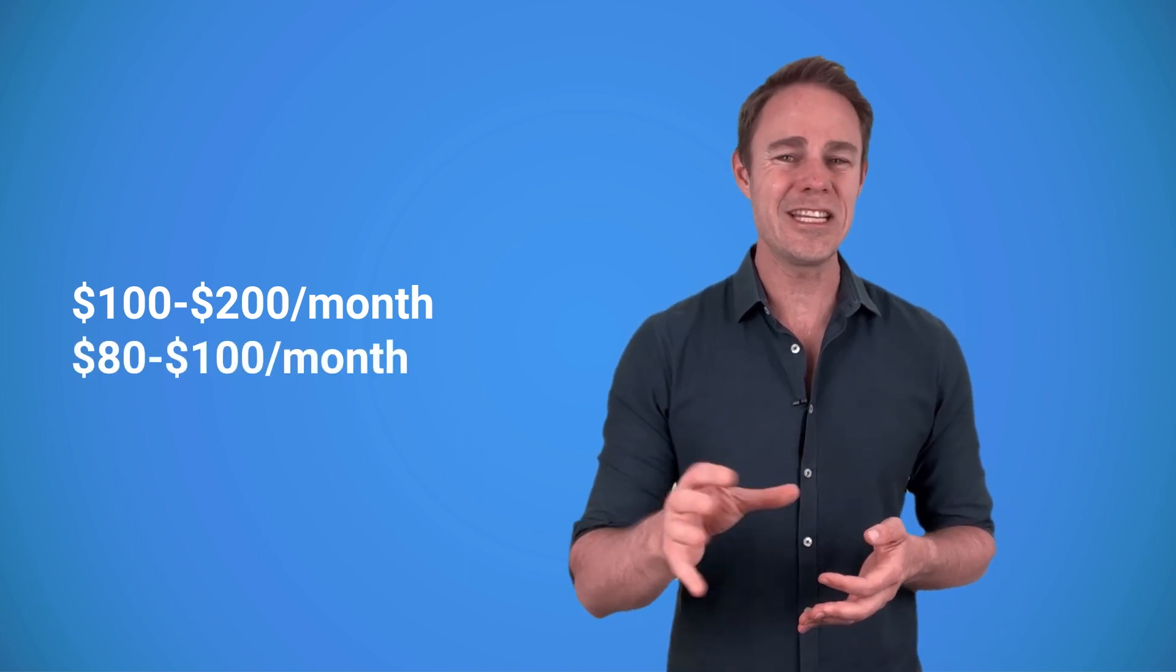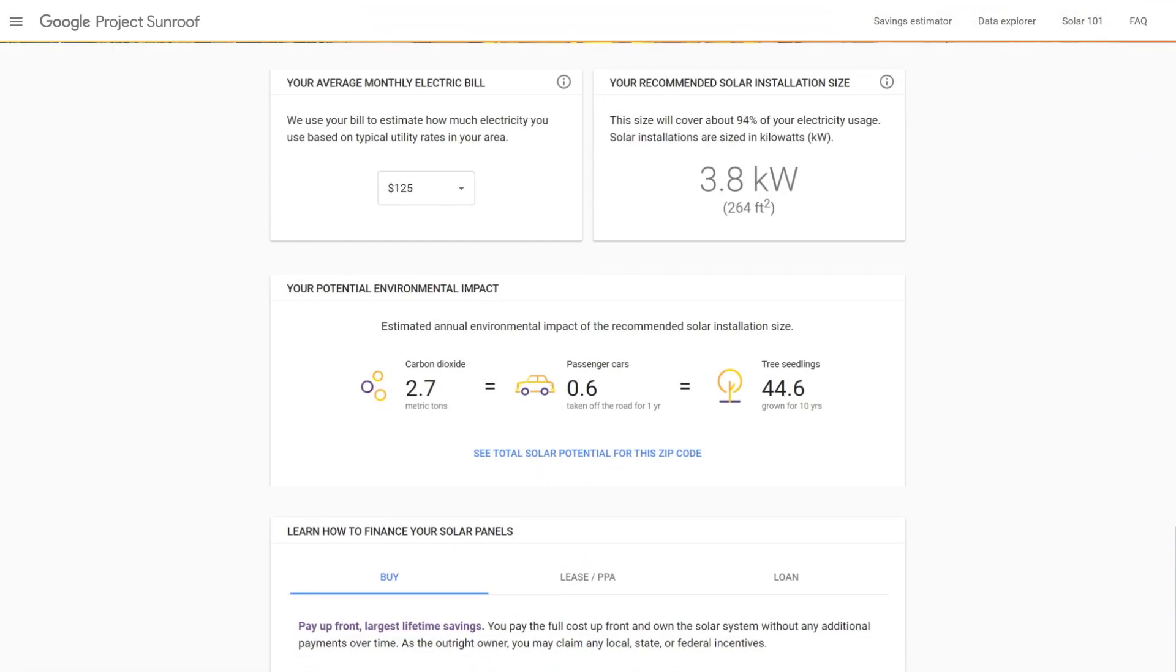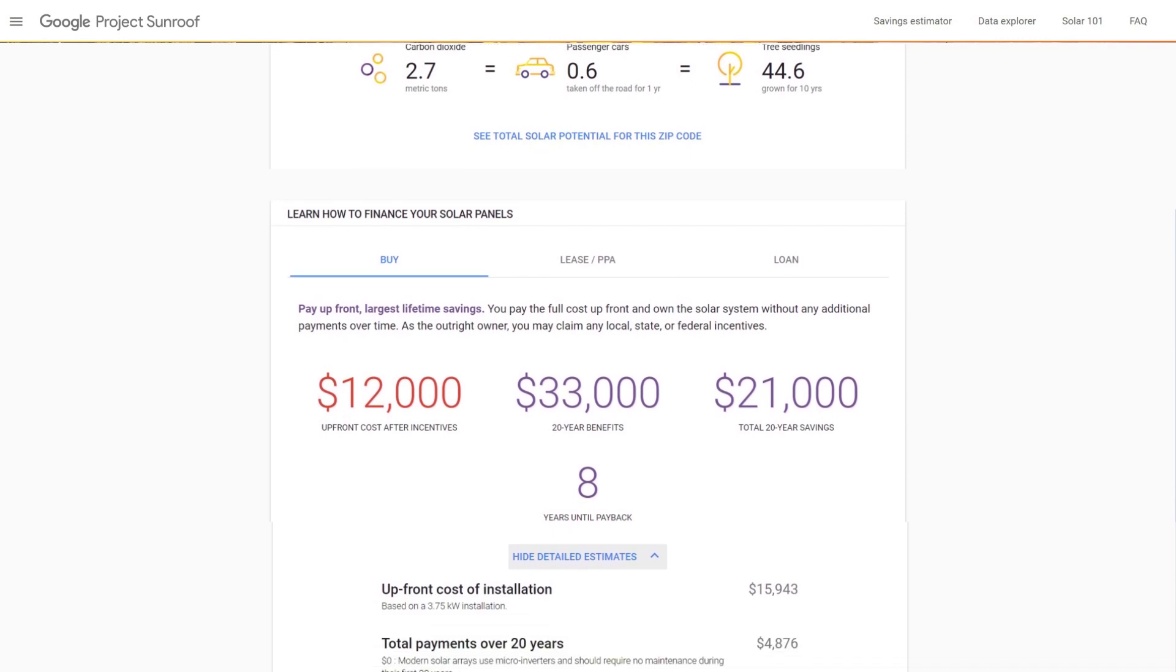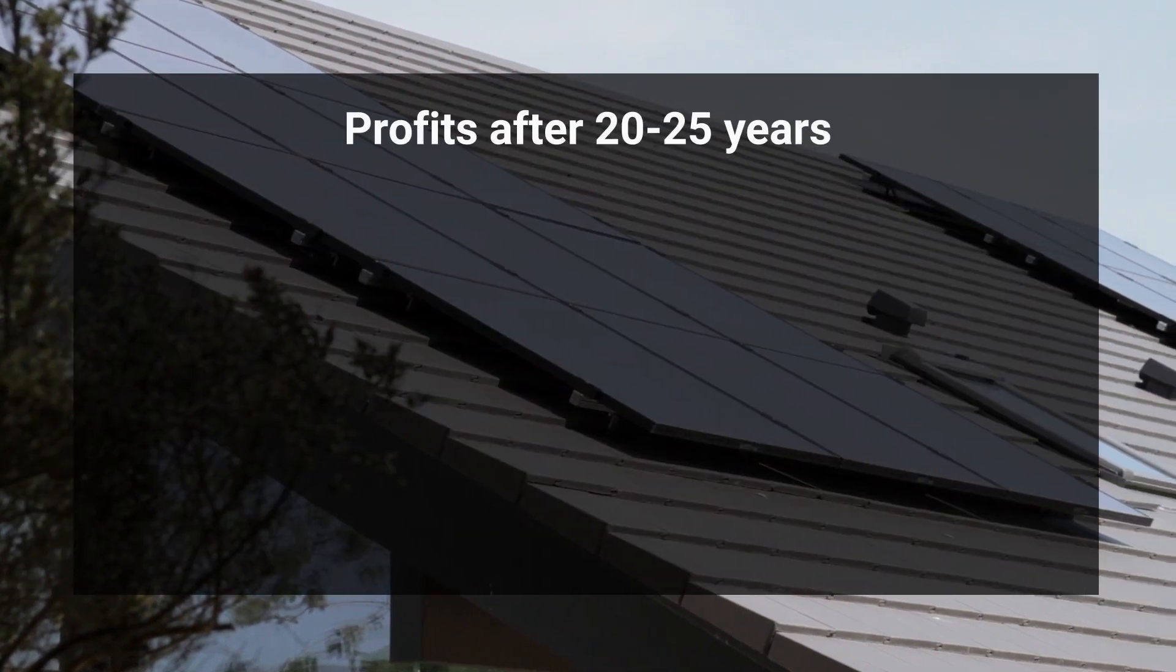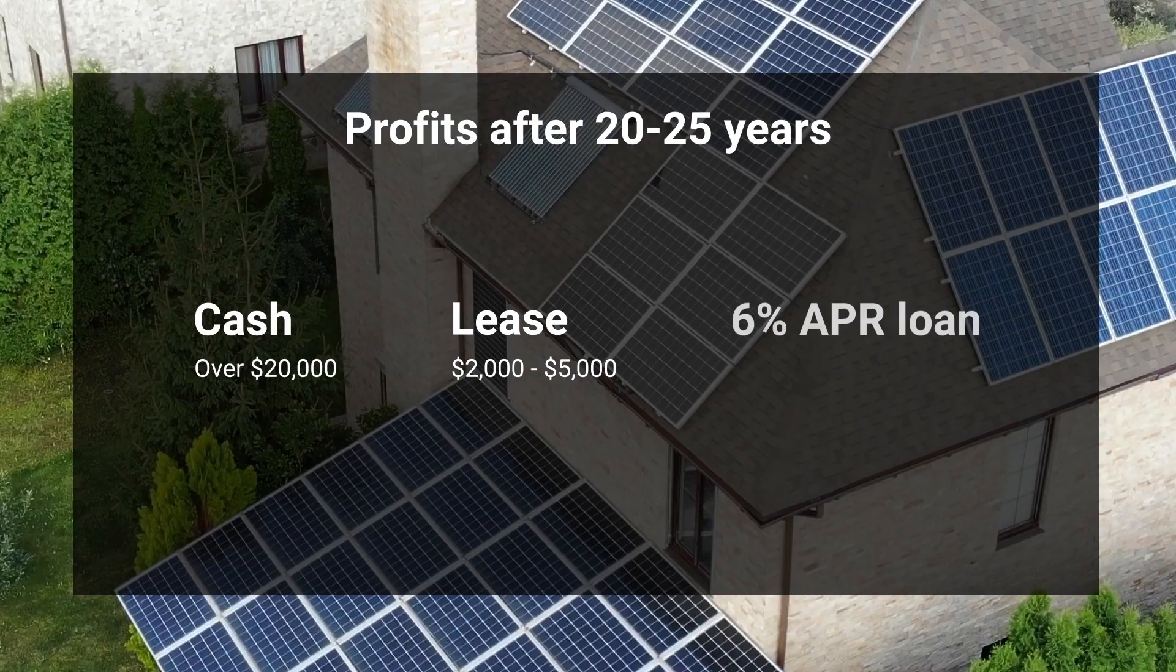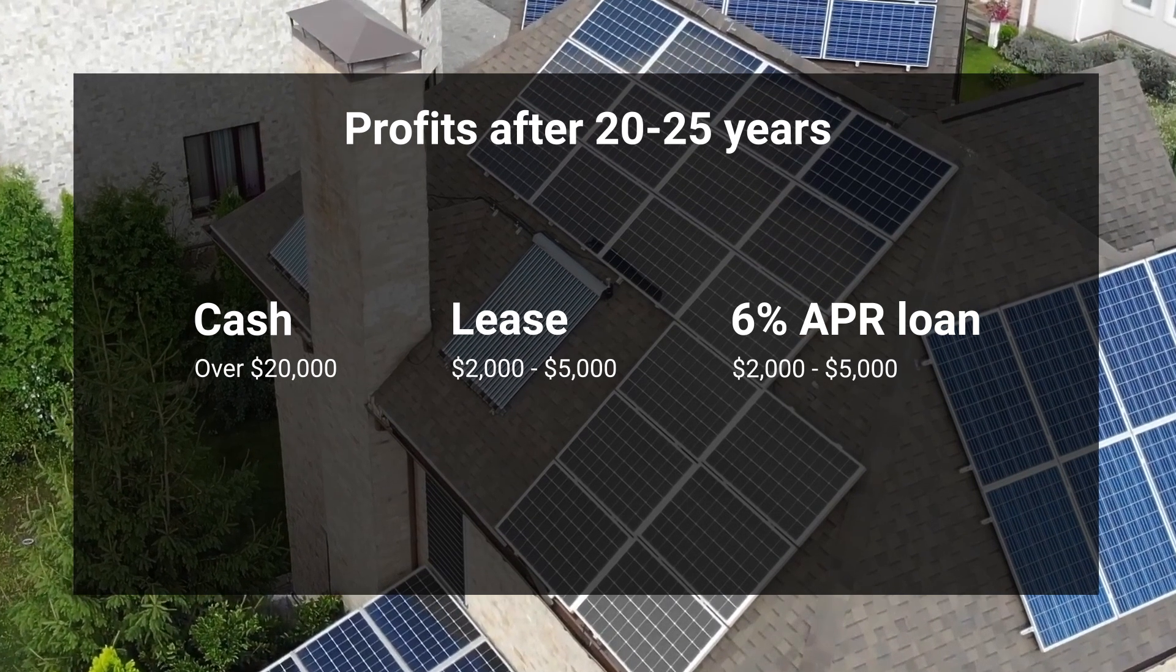Think about it like this: a solar system brings you $100 to $200 every month but monthly payments to a leasing company or a bank will amount to something around $80 to $100. As a result you are barely making money with a solar system. The experts from Google Project Sunroof calculated that a four kilowatt solar system in California can bring from $30,000 to $50,000 over its lifetime. If you paid in cash your profits after 20 to 25 years will exceed twenty thousand dollars but if you lease a system or take a loan with a six percent interest your earnings decrease to only two to five thousand dollars by year 25.